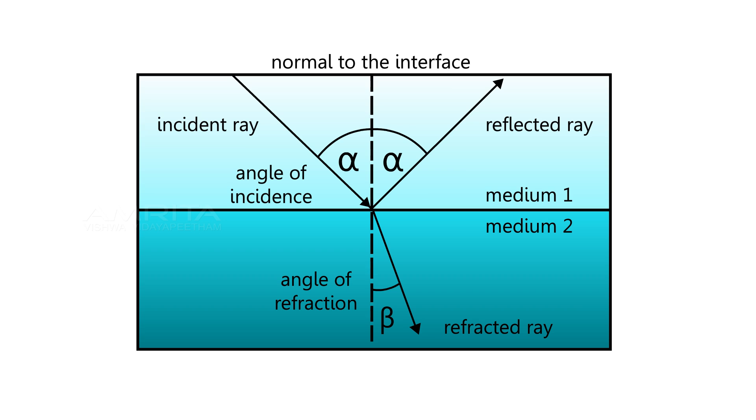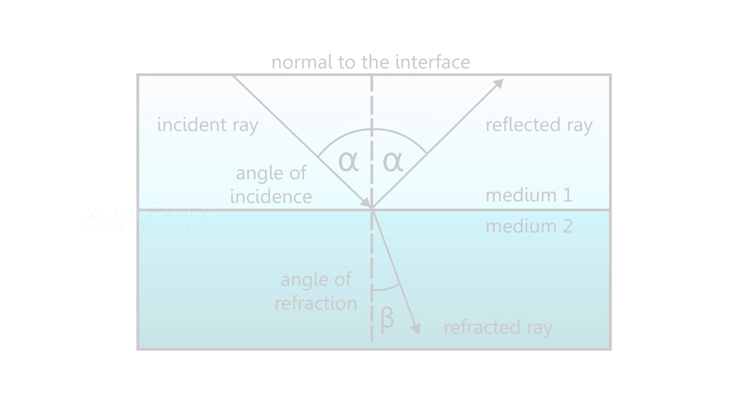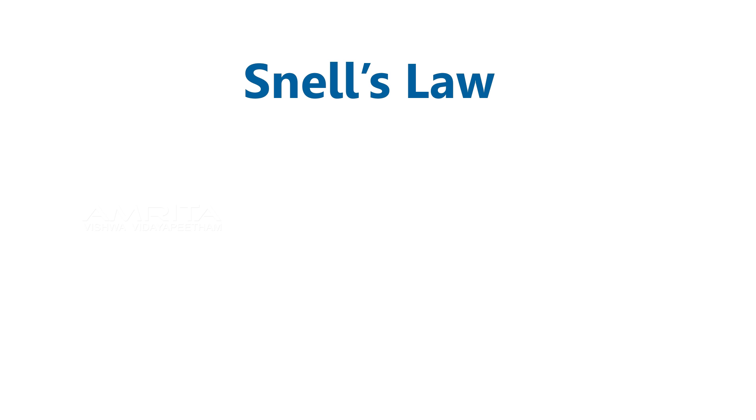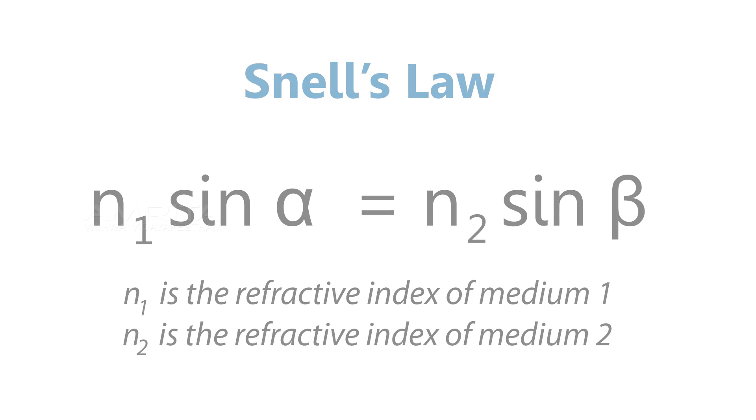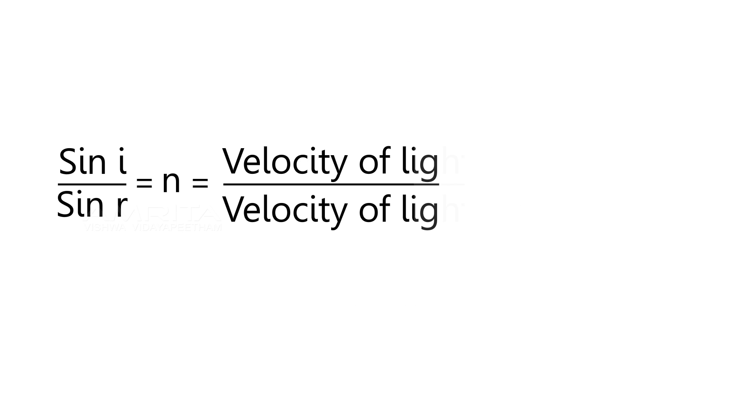The angle of incidence, reflection, and refraction are defined as angles between the particular ray and interface normal. The refractive angle is determined by Snell's law: n₁ sin α = n₂ sin β, where n₁ is the refractive index of medium 1 and n₂ is the refractive index of medium 2. Also, sin i/sin r = n = velocity of light in first medium divided by velocity of light in second medium, where i and r are the angle of incidence and angle of refraction respectively.